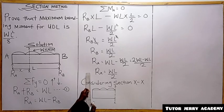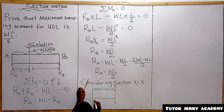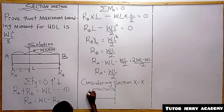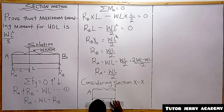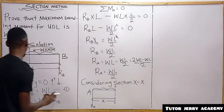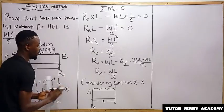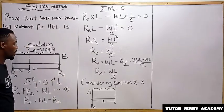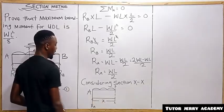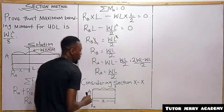On the sectioned free body diagram, we have a uniform distributed load W (kN/m) acting downward, and an upward reaction at A. Everything is at distance S from A. Whenever we cut a beam, we must consider moment M, shear force V, and normal force at the cut. Since there is no horizontal force, we will not consider the normal force.